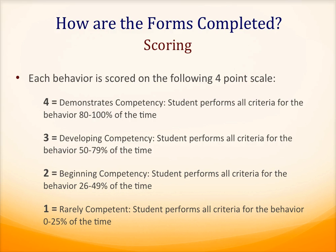4 — Demonstrates competency: student performs all criteria for the behavior 80–100% of the time. 3 — Developing competency: the student performs all criteria for the behavior 50–79% of the time. 2 — Beginning competency: the student performs all criteria for the behavior 26–49% of the time. And 1 — Rarely competent: the student performs all criteria for the behavior 0–25% of the time.